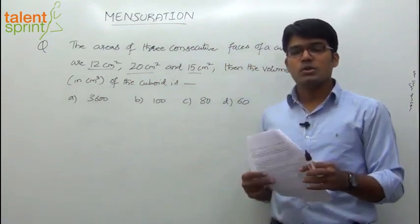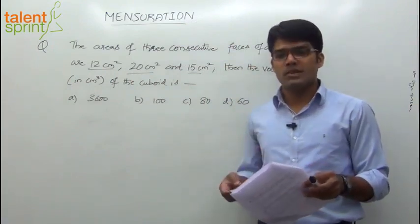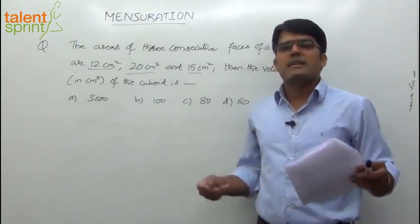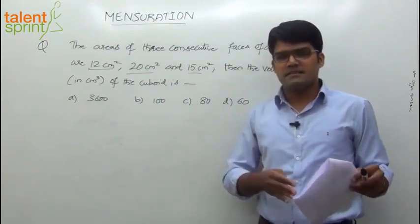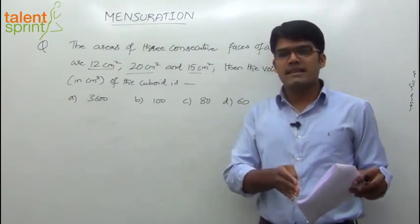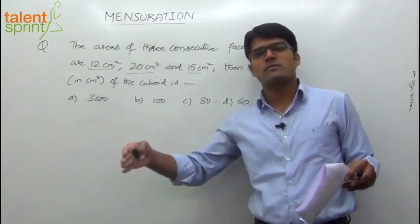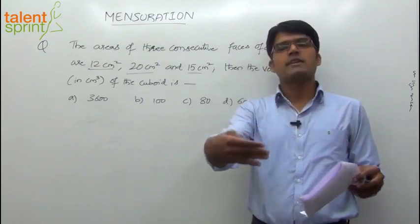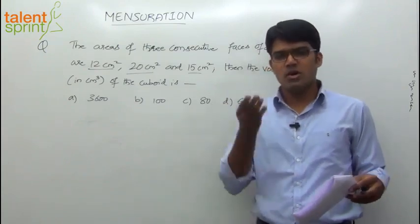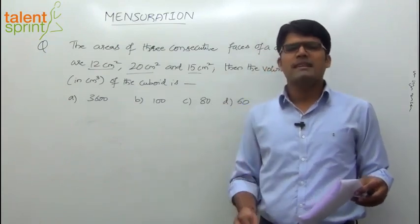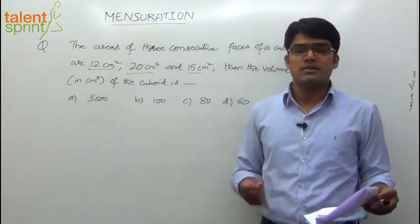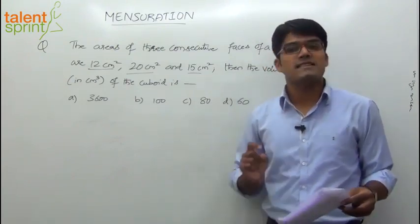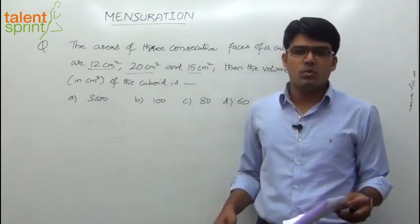In a cuboid, the opposite faces are equal. For example, if you consider a rectangular box, the two opposite faces have length into breadth as the area. Then these two will be length into height. Again, bottom and top are breadth into height, whichever way you take it. So the point is, the two opposite faces are equal in case of a cuboid.